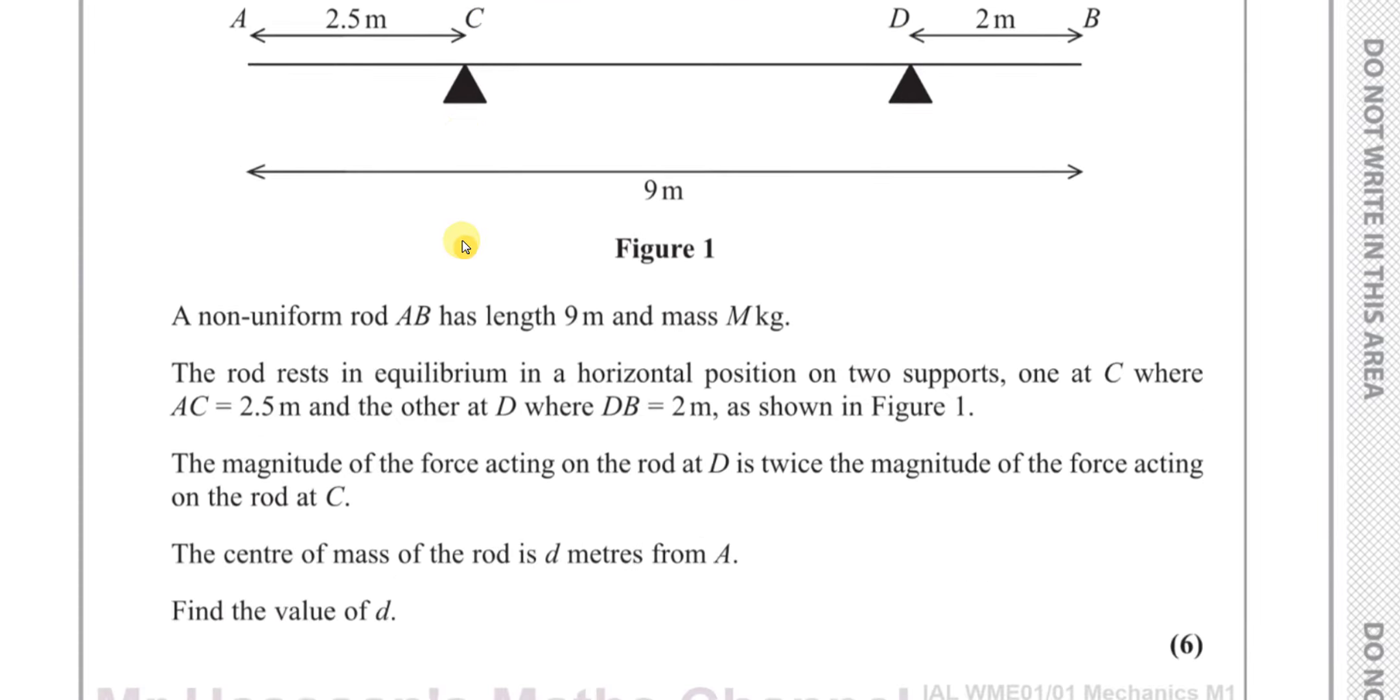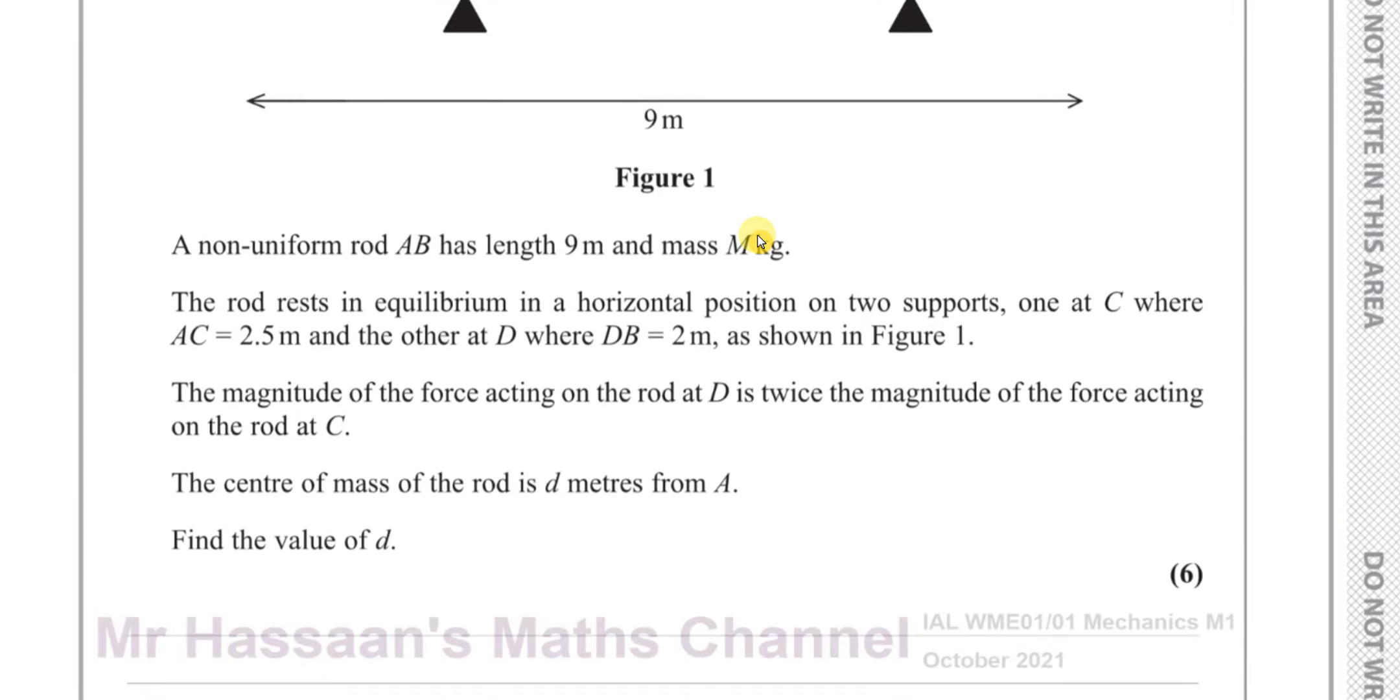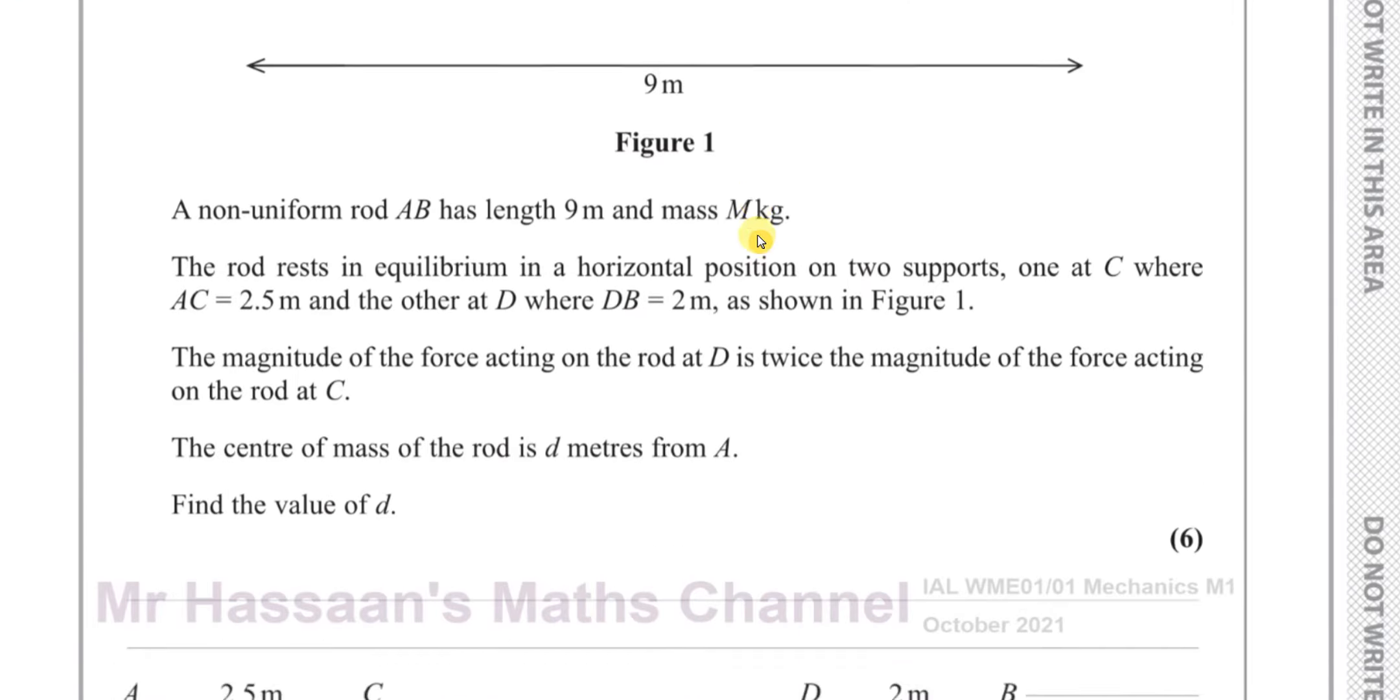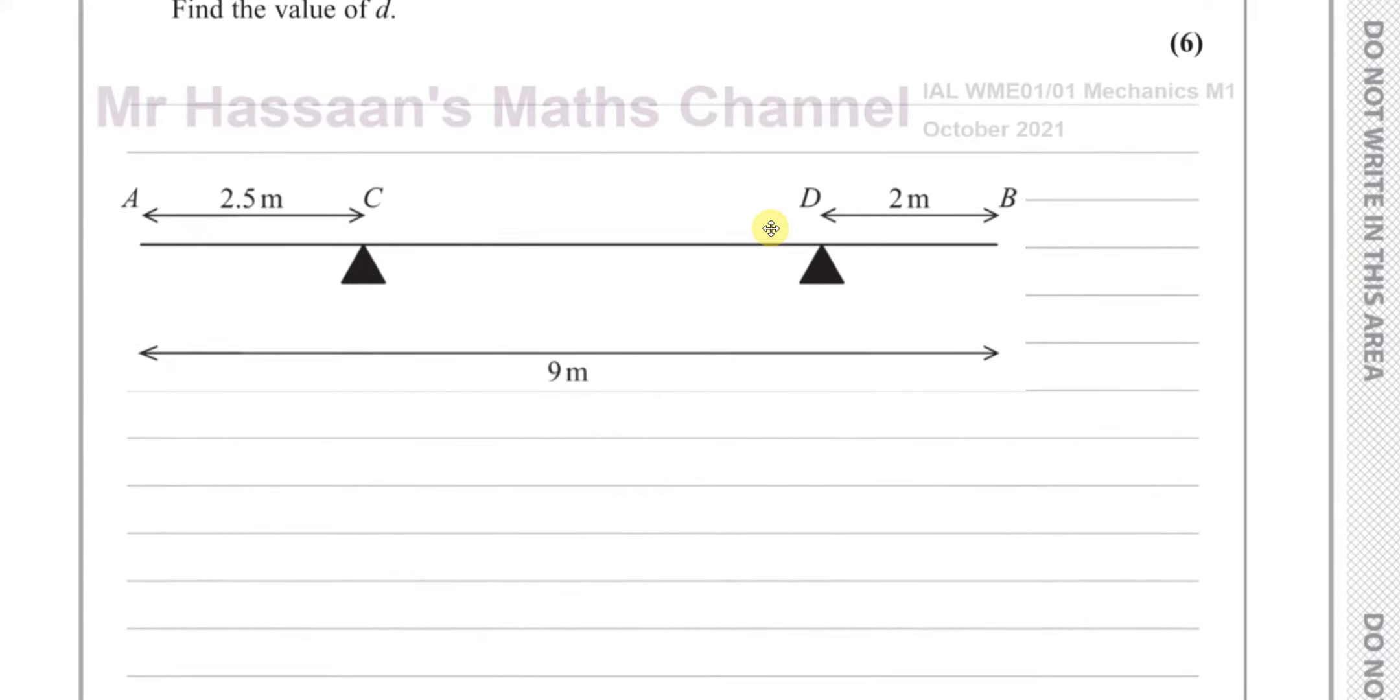The center of mass of the rod is D meters from A. Find the value of D. Okay, so we've got the situation here. I've just drawn the diagram down here so you can see what's going on.